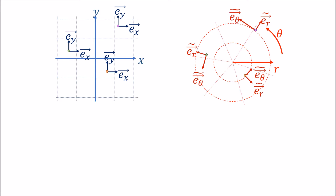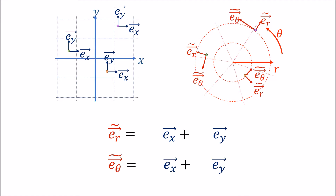Now if we consider the Cartesian and polar coordinate systems, the polar coordinate system has basis vectors that change direction and length from point to point. So if we want to try and invent the forward transform, we need to build the polar basis vectors, which are changing from point to point, out of the Cartesian basis vectors. This is probably going to seem really challenging when the basis vectors are changing at every point in space.